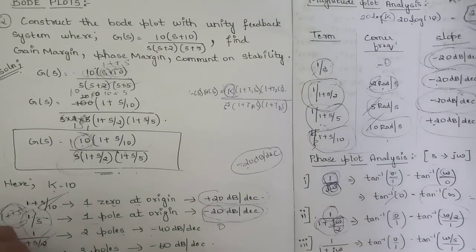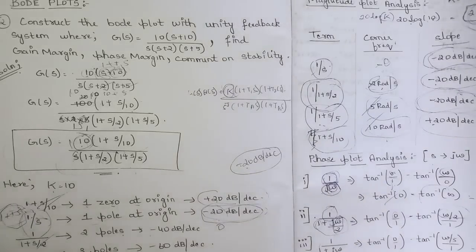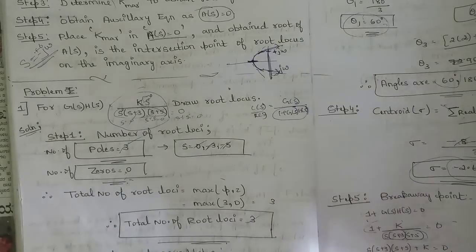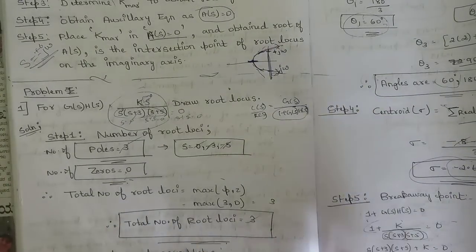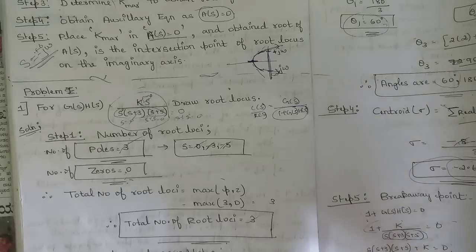Some problems related to Nyquist plots and state equations are also pending, but simple problems from those will be asked. From Module 5, Bode plots is one question that is definitely asked — you must study it. For exam strategy: first attempt all questions you know, then draw graphs like root locus and Bode plots at the end. I suggest doing Module 3 first as it has more weightage and takes less time, then the Routh-Hurwitz problems, and finally root locus, Bode plots, block diagram reduction, and mechanical systems.